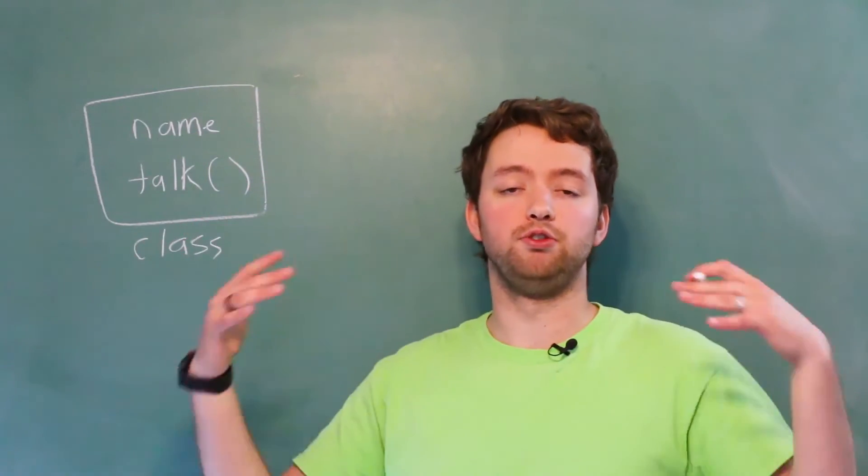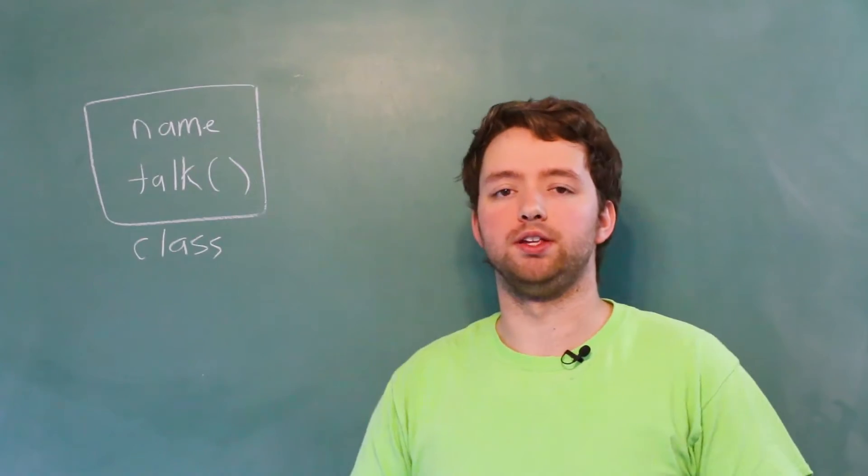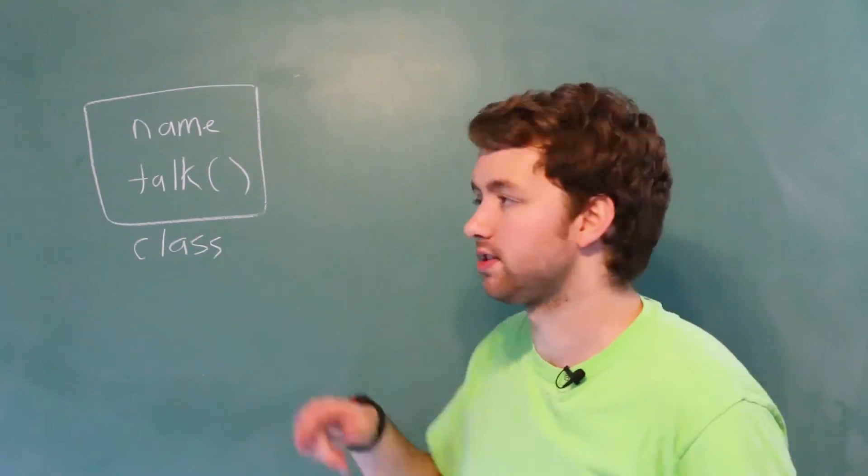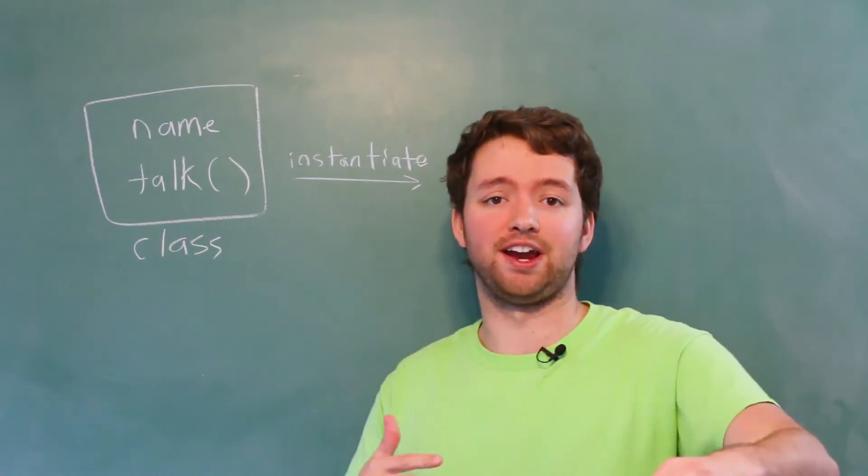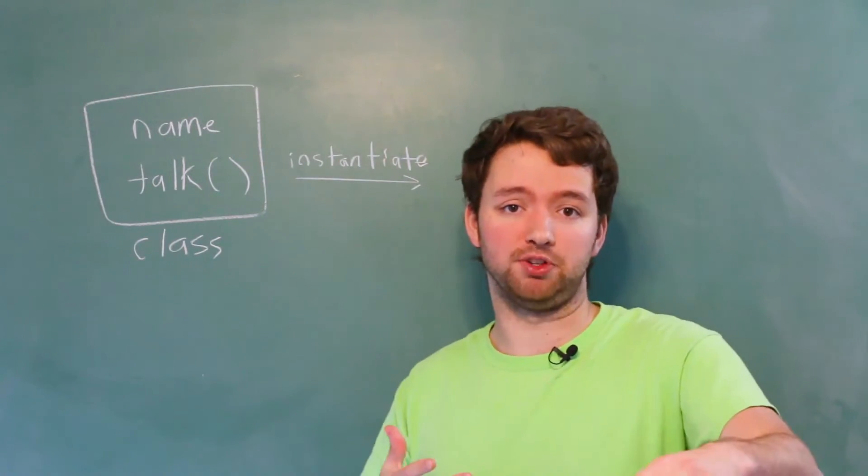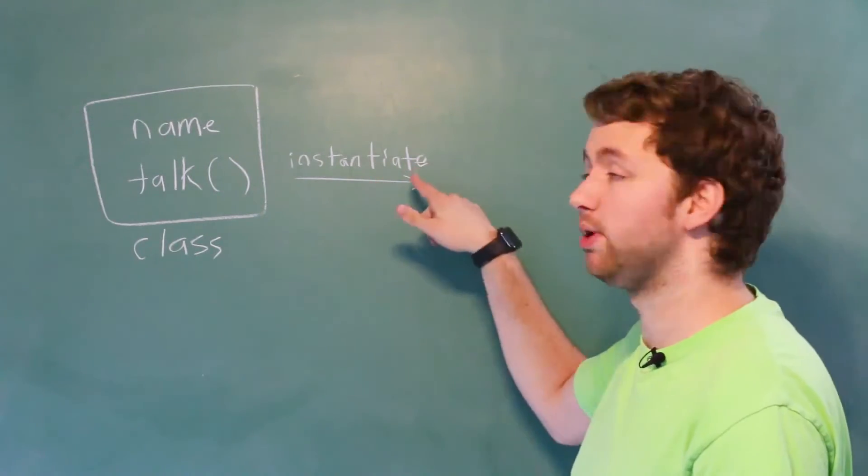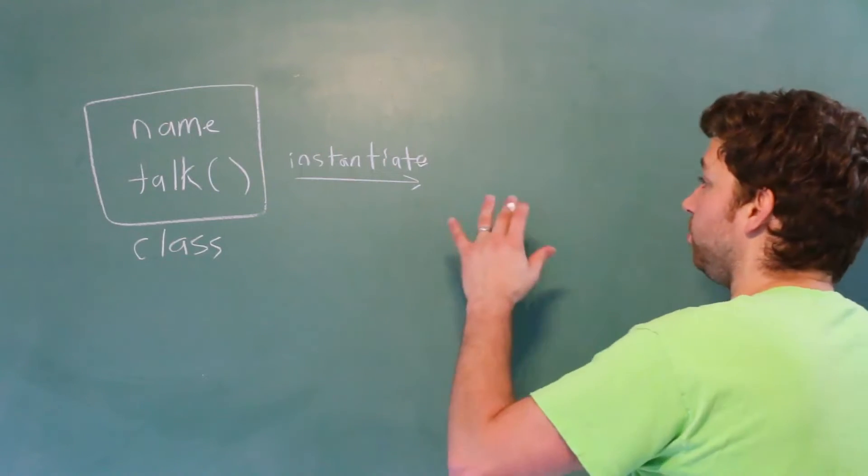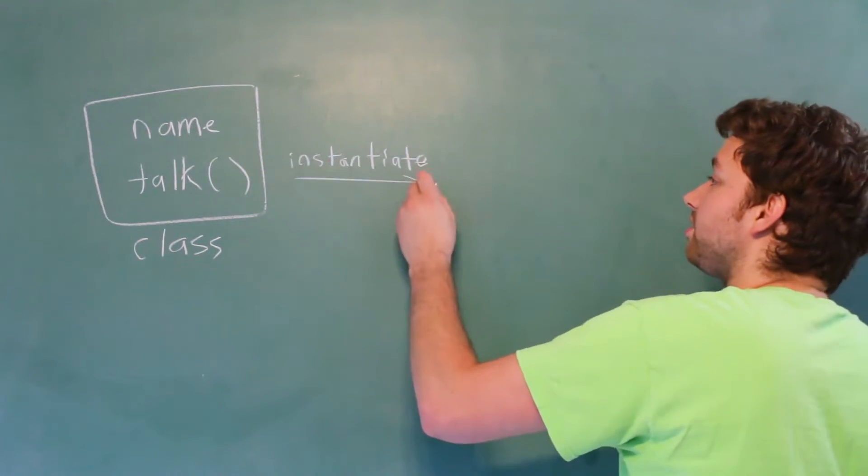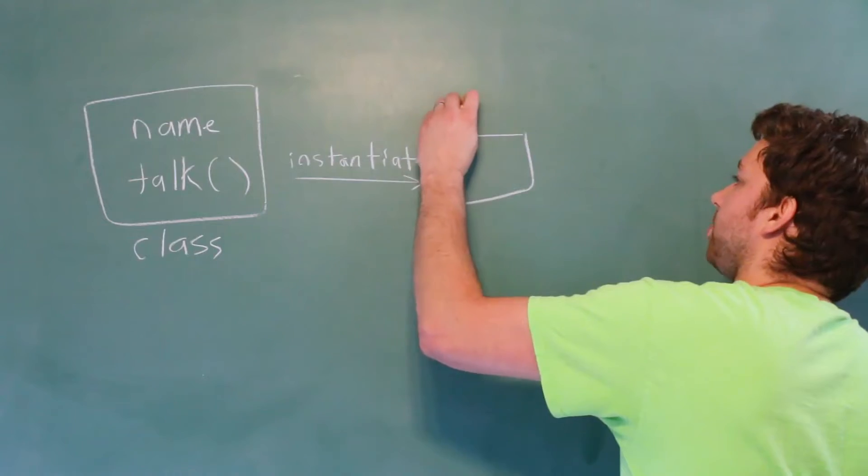Now, if we wanted to make numerous people, all we have to do is instantiate this class. So instantiate is one of those words you can use when you're hanging out with friends to impress them, pick up the chicks, etc. So make sure you remember this word. It'll help you. And this process will create what's known as an object.